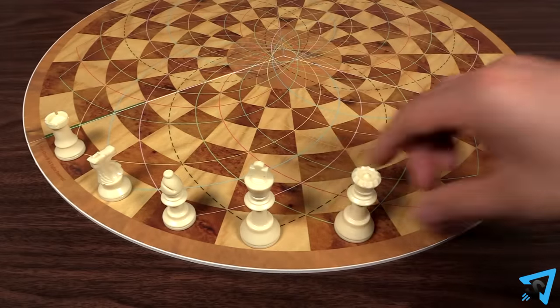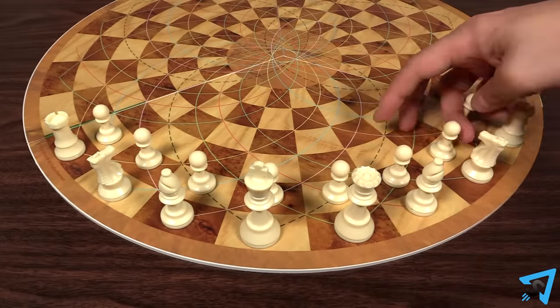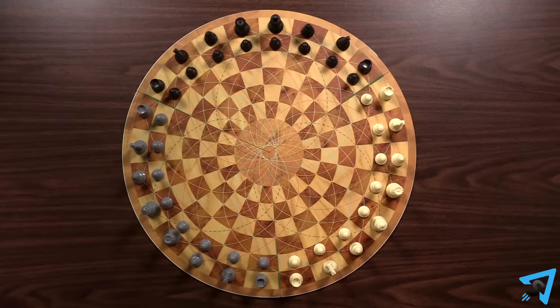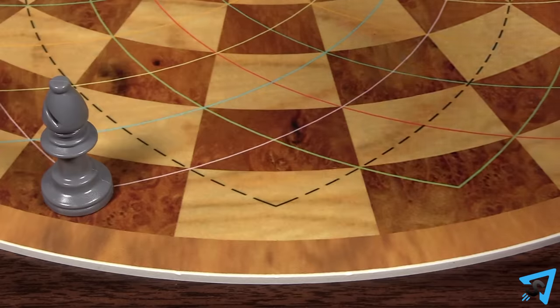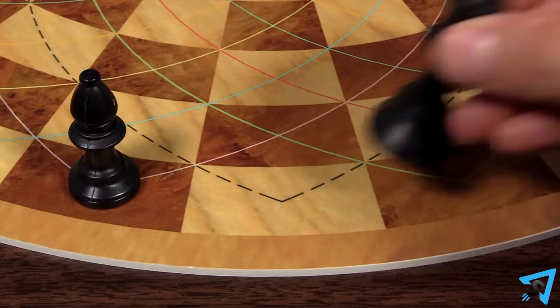Set up the pieces along the two outside rows of the board with each player's pieces set up in between the green lines. Ensure that all the kings are placed on the white spaces.